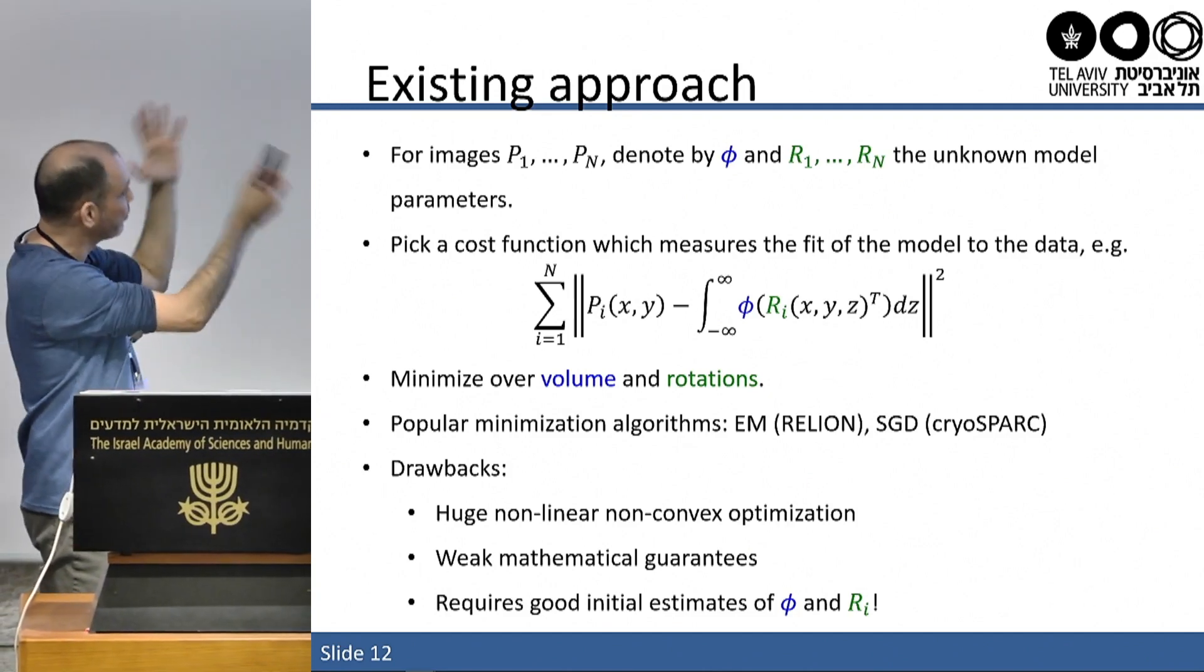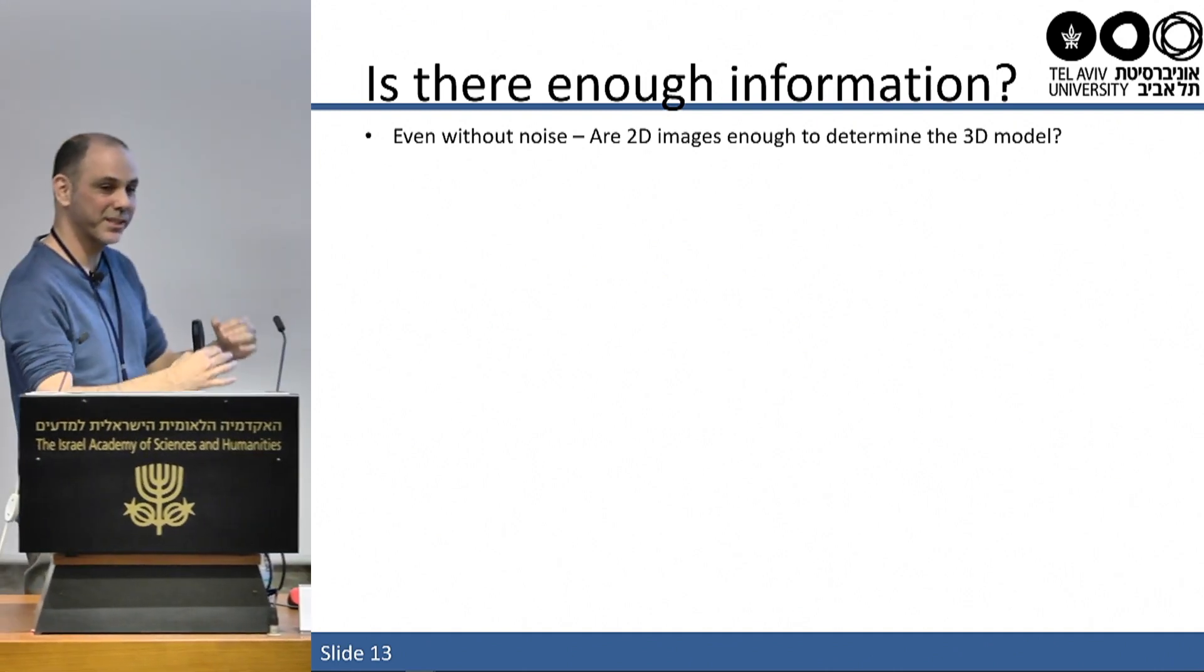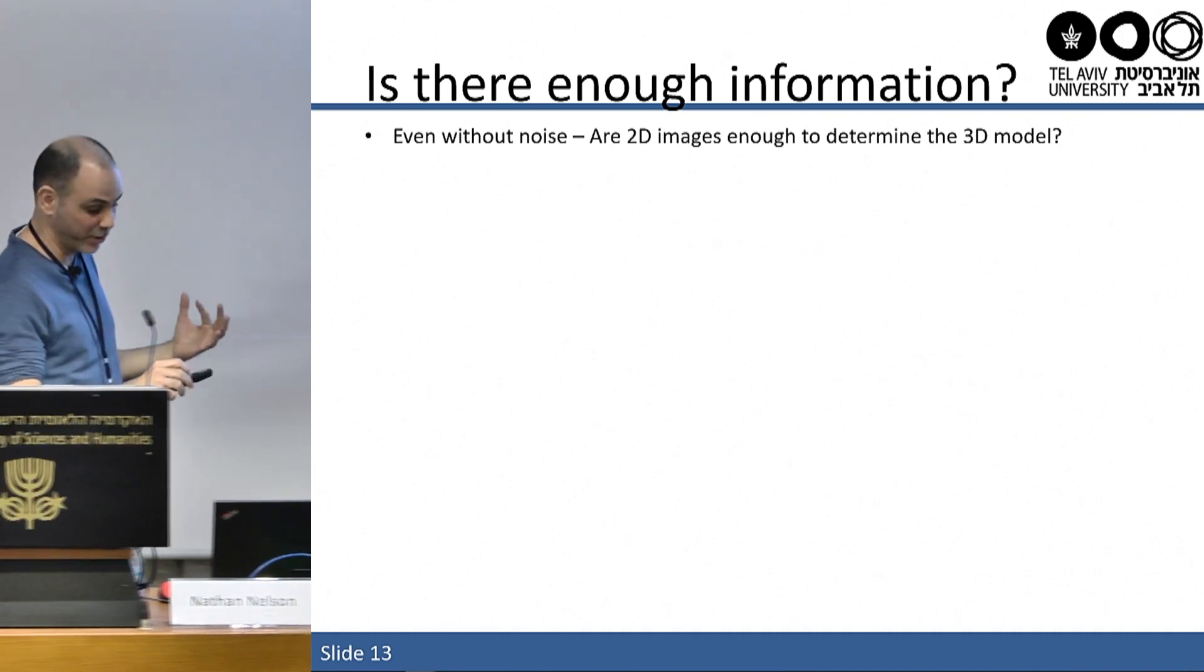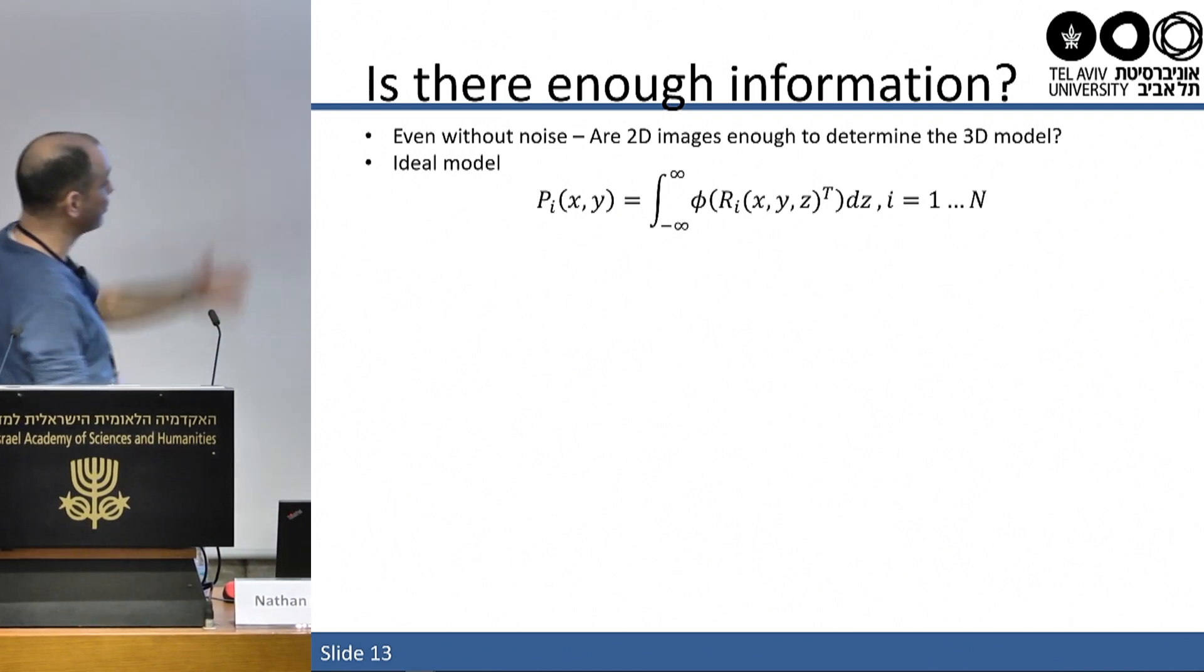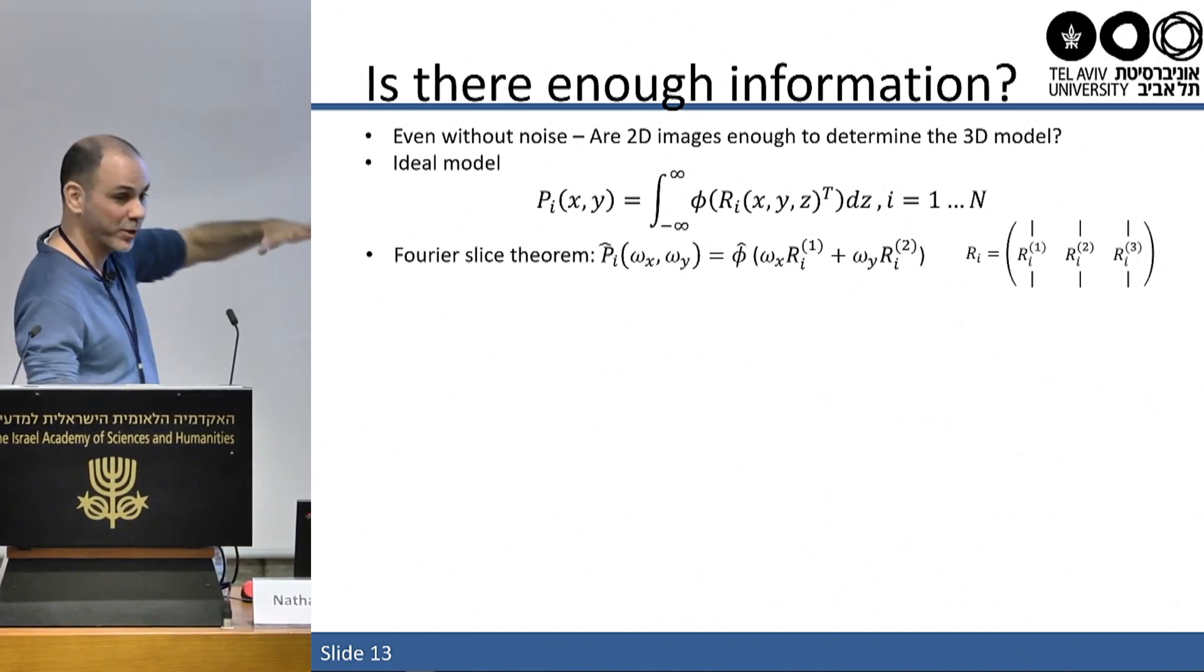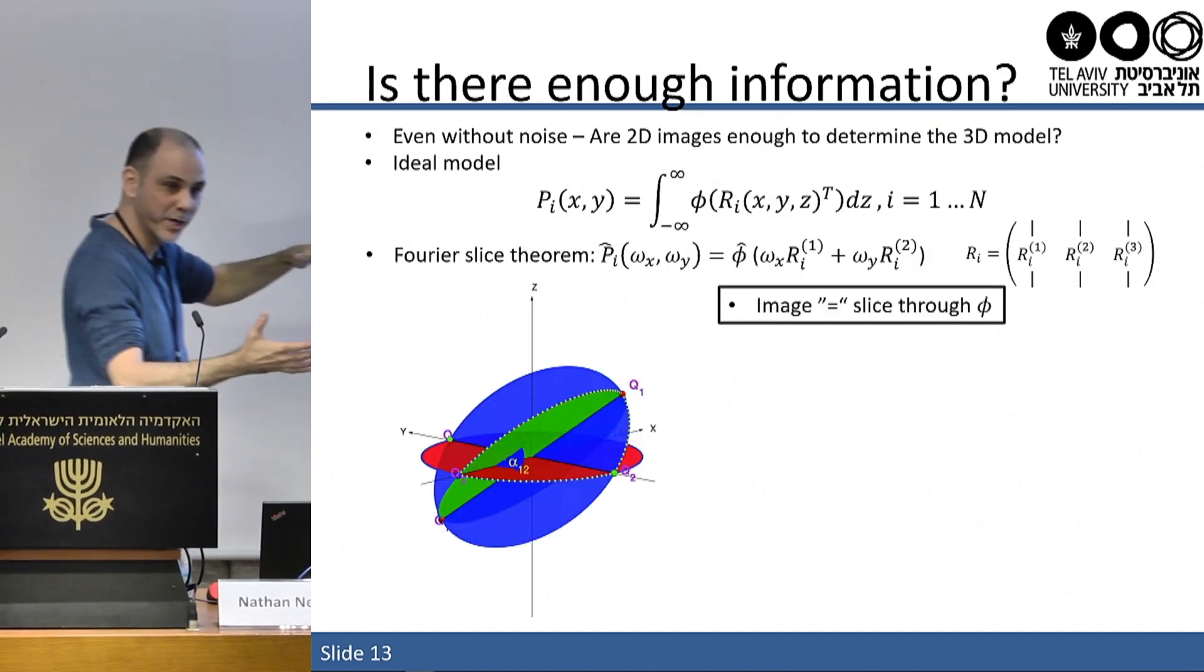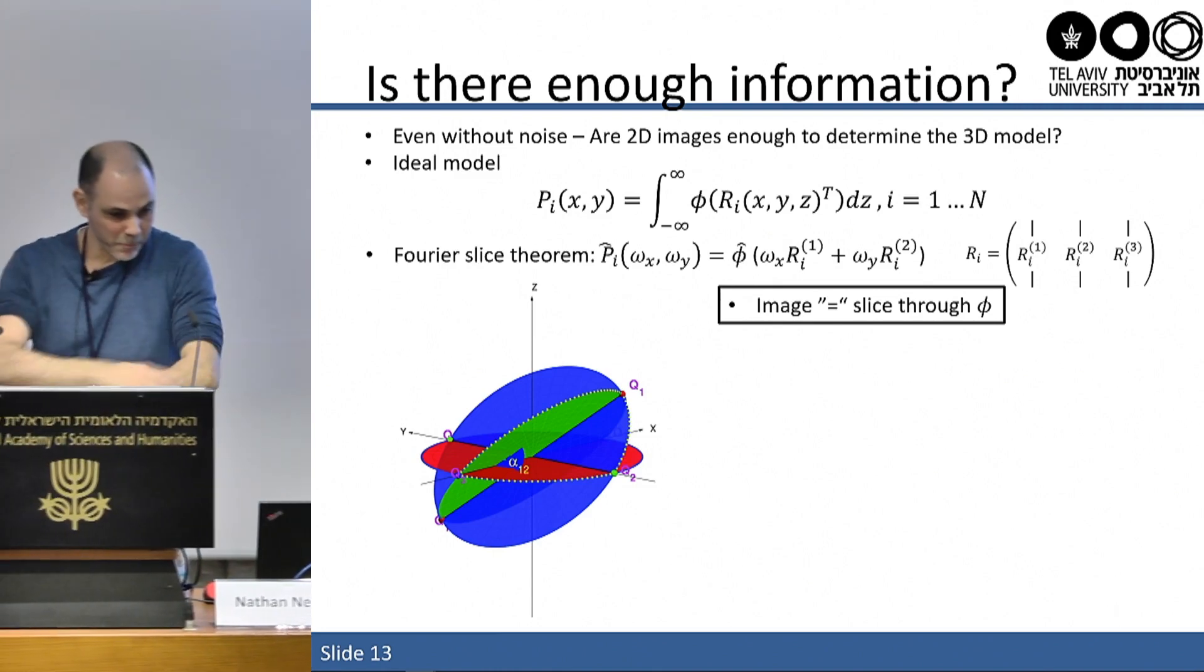First, it is a huge non-linear, non-convex optimization. So before we had GPUs, high resolution refinement could take weeks. But still, we have very weak mathematical guarantees about the outcome of the process. And that is a polite way to say there is nothing that guarantees that it will converge to the right solution. And even if you want the methods to converge to the right solution, we must have very good initial estimates for phi and the rotations. So if we can somehow get an accurate initial low resolution model for phi, those methods will work great. If not, there are no guarantees. So when mathematicians approach such a problem, usually they try to ask the simplest question possible. Suppose they get clean images, no noise. Is there enough information to get back the molecule? No shifts, no noise, nothing. And for that, we use a very useful tool in analysis in this field, which is called the Fourier slice theorem.